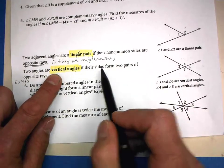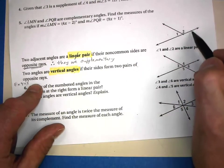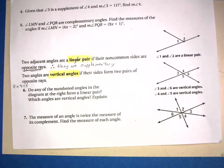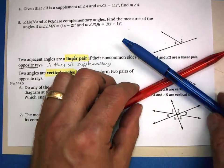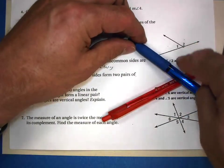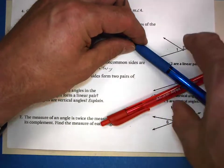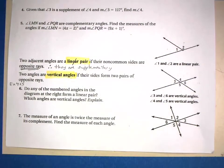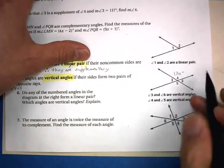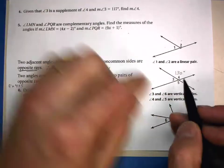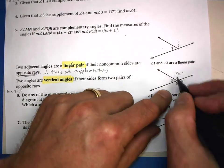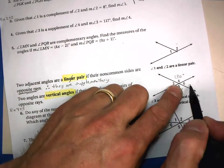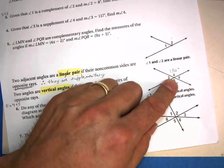Vertical angles are formed when their sides form two pairs of opposite rays — think of two different lines crossing each other. The angles opposite each other formed by two intersecting lines are a vertical pair. There are two vertical pairs created. What's neat about vertical angles is that they are always congruent. If one angle is 130 degrees, its vertical angle is also 130 degrees.